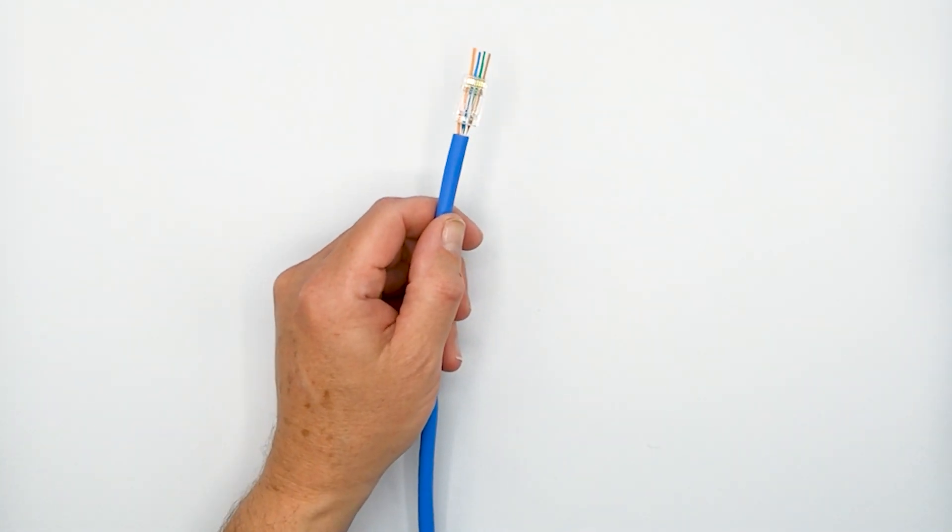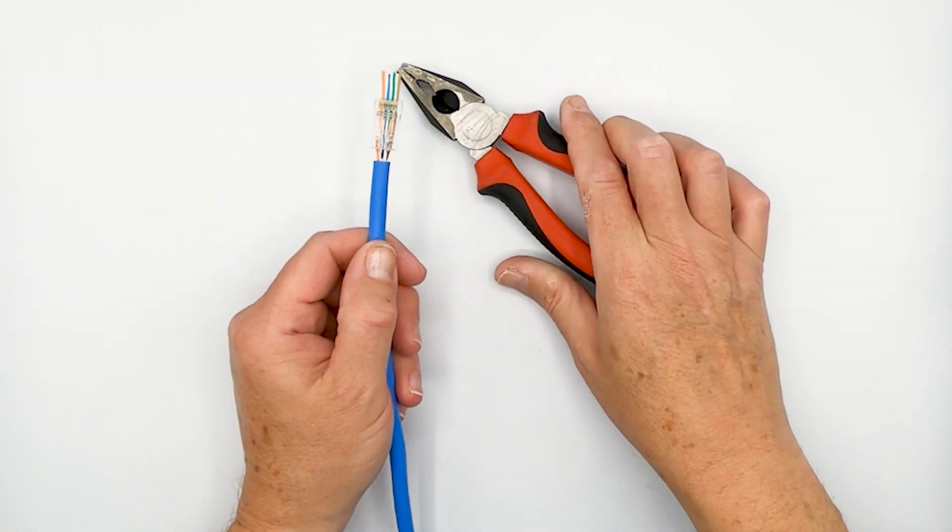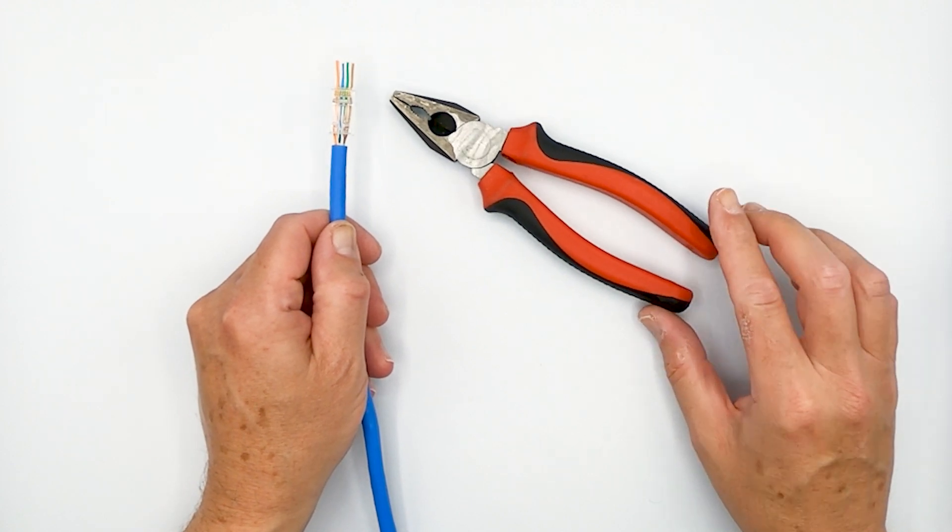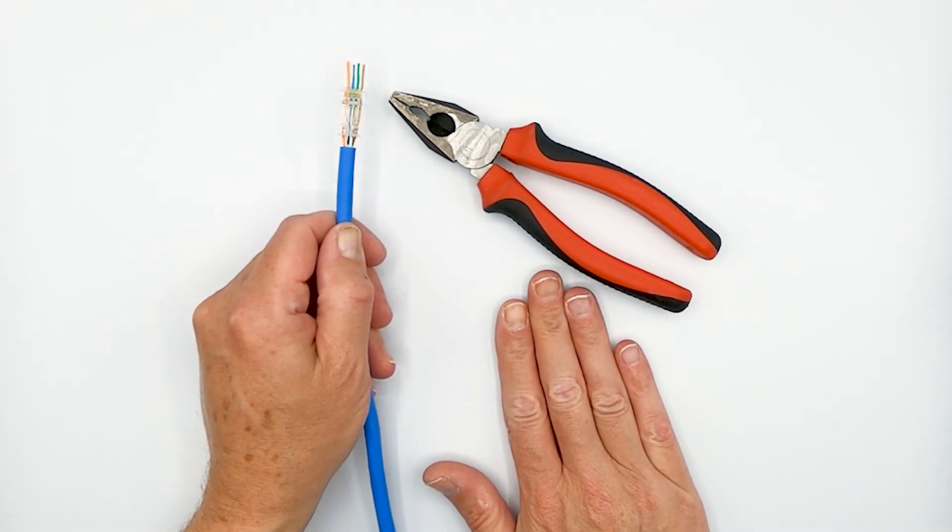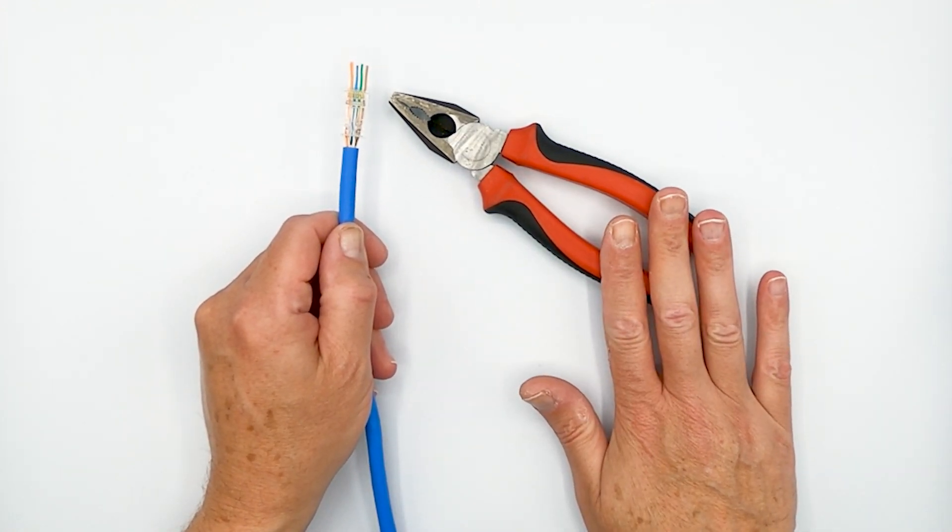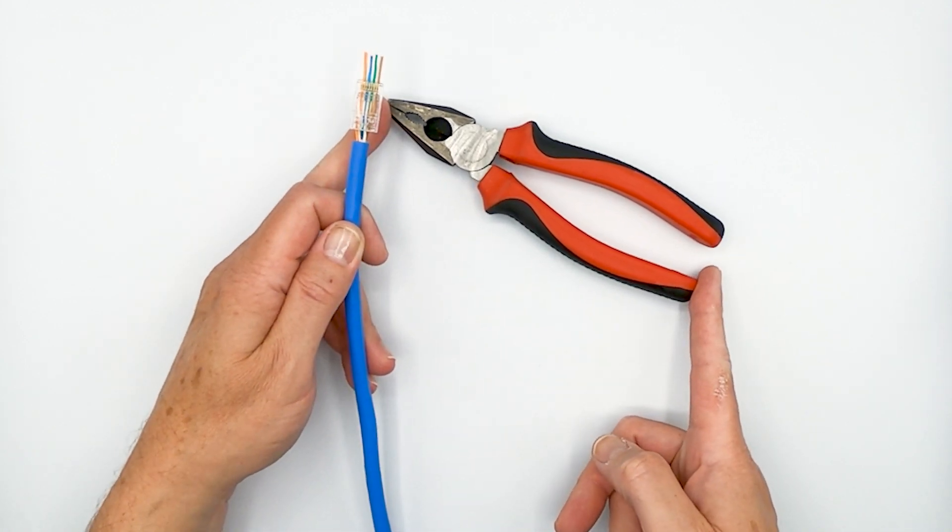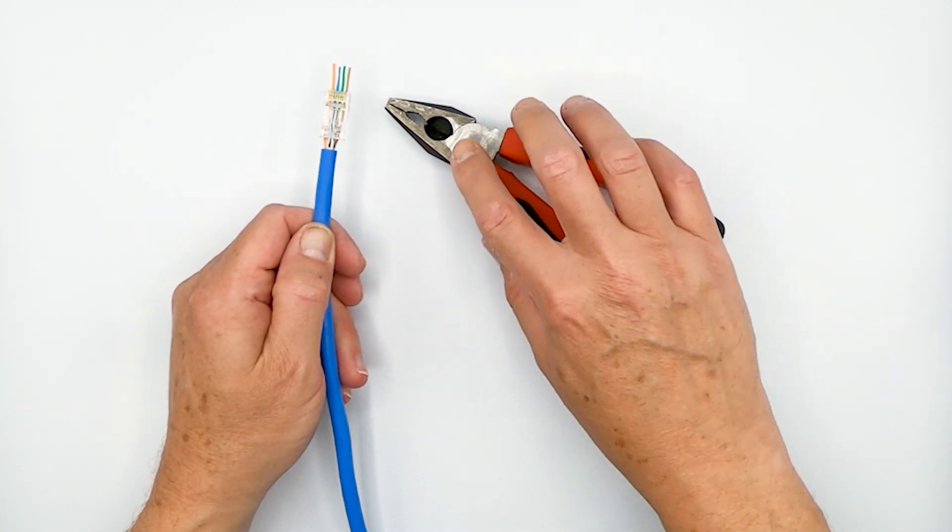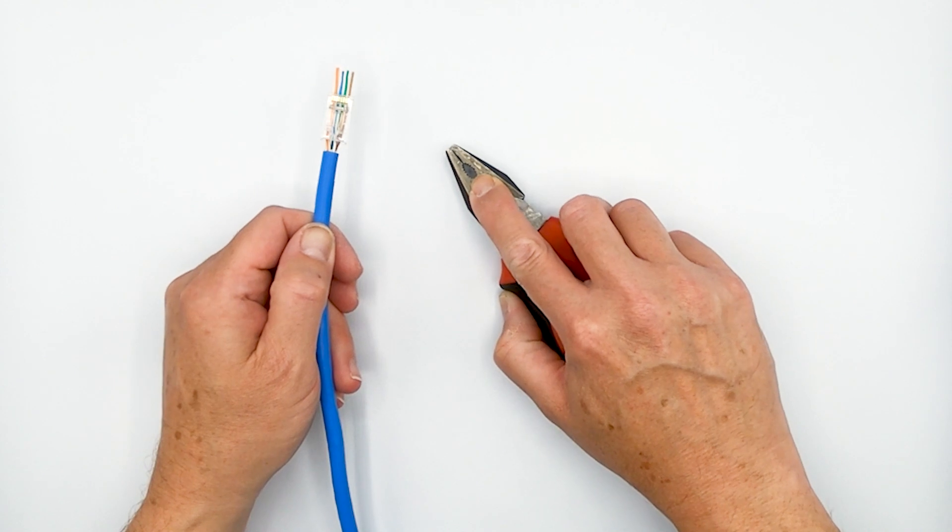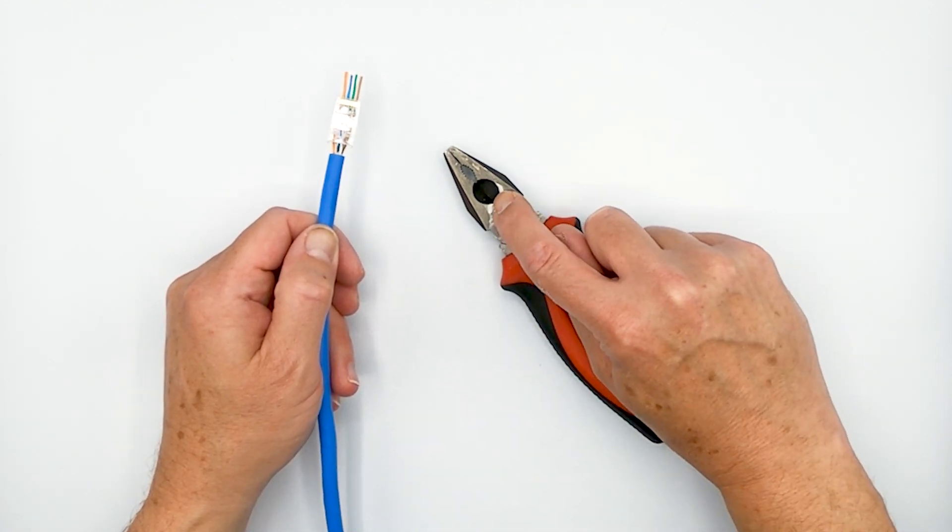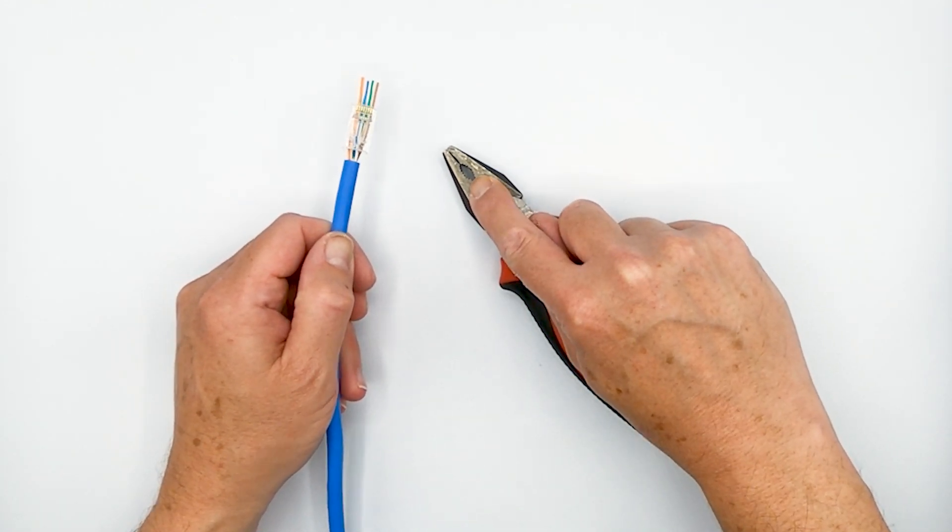And the way you do that is simply a pair of Lineman's electrical pliers. Now, you can pick these up at Harbor Freight. You don't need to spend a lot of money on them. This is a six inch set here. And what I use is the oval cutout near the nose. I don't use the flat part. I don't use the cutter part. I use the oval cutout.